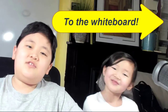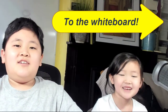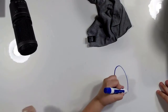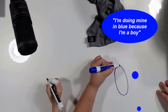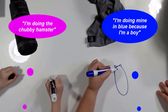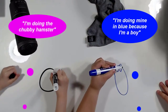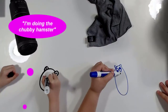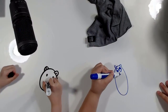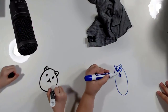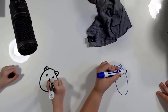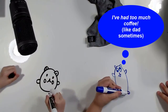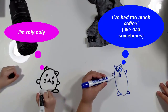So, to the whiteboard! Yay. So, hamster. I'm doing my hamster because I'm a boy. I'm doing a chubby hamster. It's a hamster that had too much coffee. It's a hamster that's roly-poly.